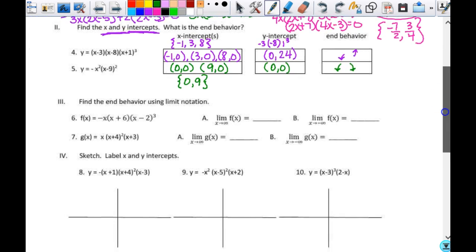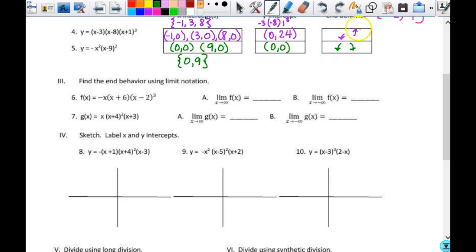Now we're going to find the end behavior using limit notation. End behavior, this has a degree of 3, 4, 5. So it is odd and it is negative. So the end behavior is going to look like that. So the limit of the function as x approaches positive infinity. So the bigger and bigger x gets, the smaller and smaller y gets, so it's going to approach negative infinity. The limit of the function as x approaches negative infinity. So as x gets smaller and smaller and smaller, y gets bigger and bigger and bigger. So then that's going to be positive infinity.